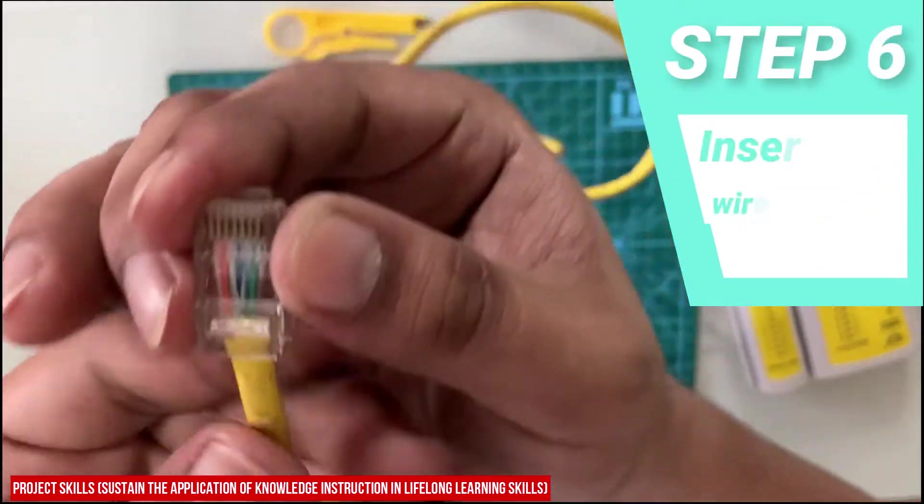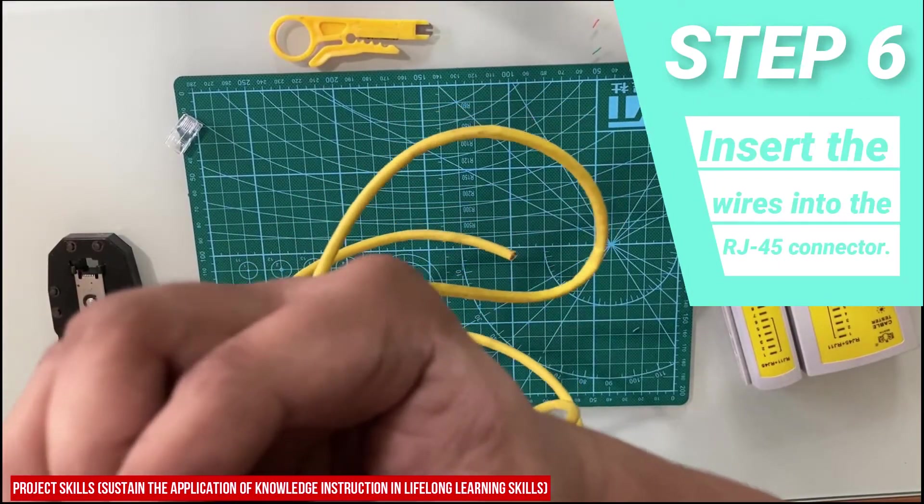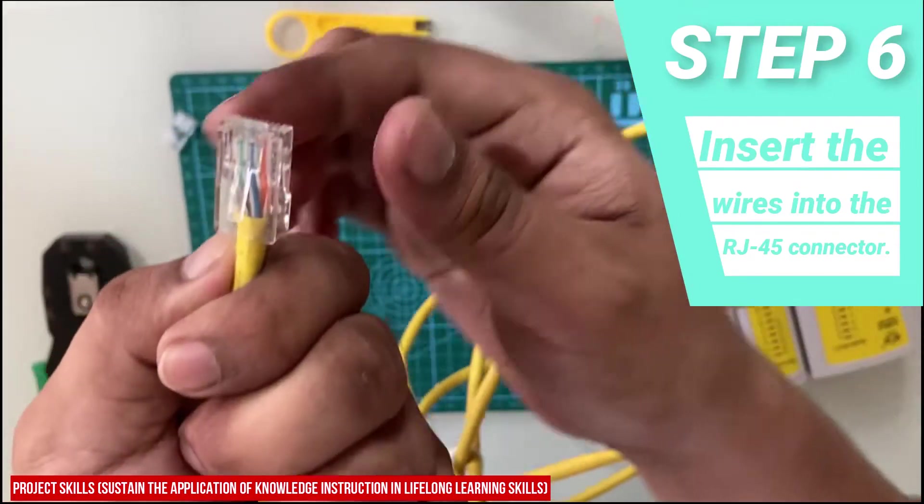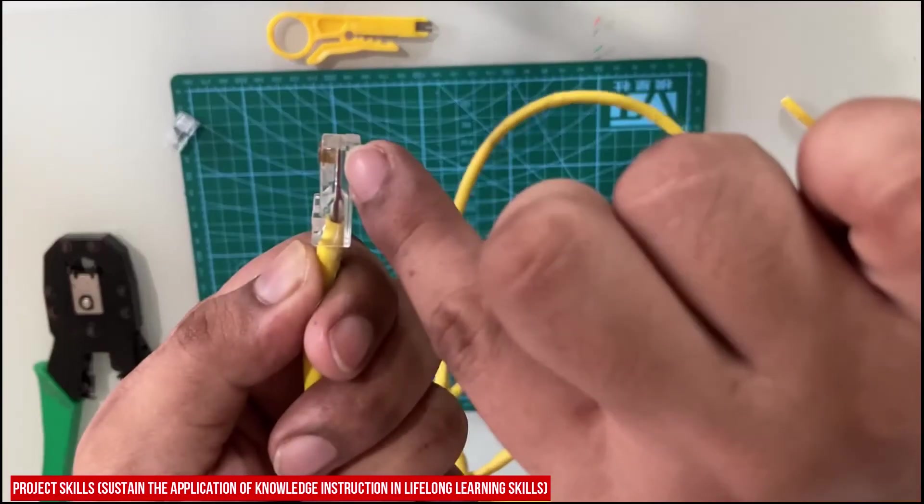Step six: Insert the wires into the RJ45 connector. Maintain the wire order from left to right and slowly push them into the RJ45. Make sure that when you do this, the RJ45 tab is facing downward.